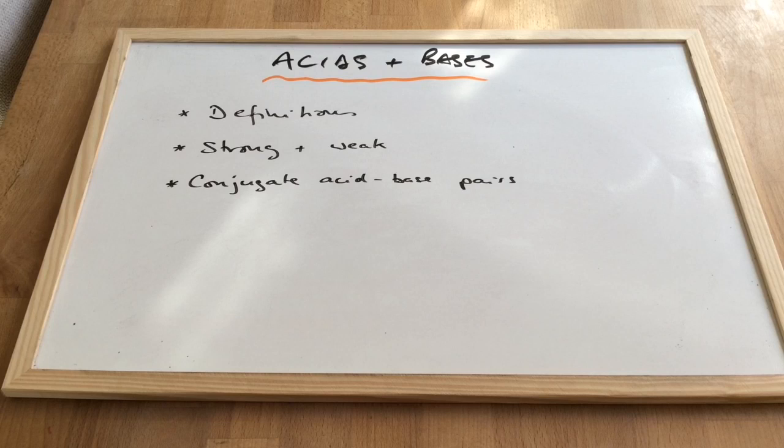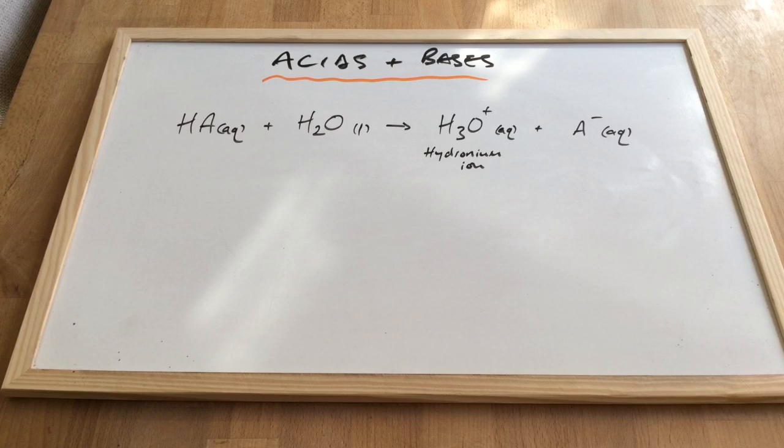In this video I'm going to introduce the topic of acids and bases. We'll start with the definition of an acid and a base, then go on to what we mean by strong and weak acids and bases, and then we'll finish with something known as conjugate acid-base pairs.